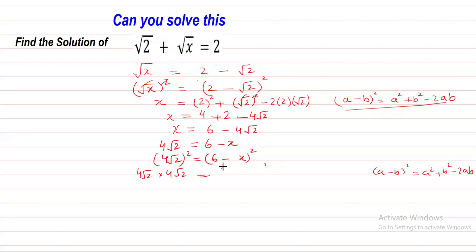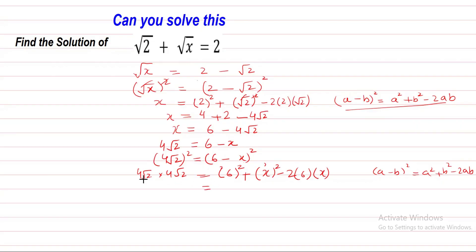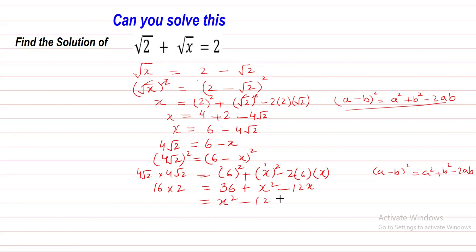We simplify 6 minus X whole square using the identity A minus B whole square equals A squared plus B squared minus 2AB, where A is 6 and B is X. So we get 6 squared plus X squared minus 2 times 6 times X. On the left side, 4 times 4 is 16 and square root 2 times square root 2 is 2, giving 32. This yields X squared minus 12X plus 36 equal to 32.